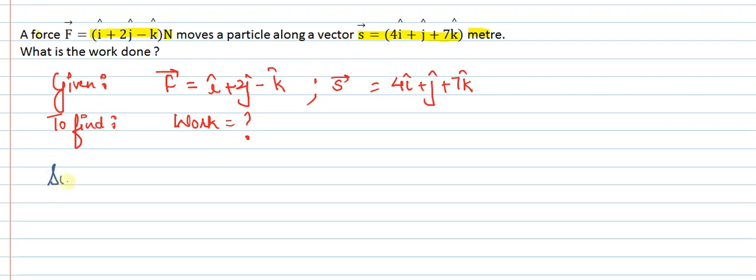Okay, so let's do the solution of this. हमें पता है कि work जो होता है वो F dot s, F dot s के बराबर आता है. ठीक है अगर यह F dot s के बराबर है तो हम सीधे-सीधे लिख सकते हैं work is equal to F की value i cap plus 2j cap minus k cap dot s की value हम यहां पर रखेंगे 4i cap plus j cap plus 7k cap.